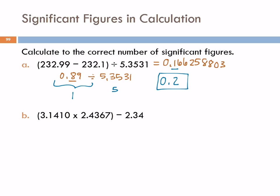Student question: why is the 9 not significant? This 9 is not significant because when I do that subtraction — 232.99 minus 232.1 — this is where the last significant digit is. The way you learn is by making mistakes and asking questions.